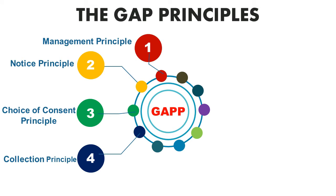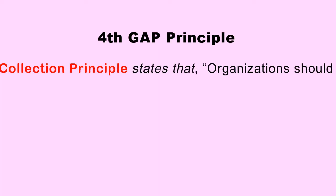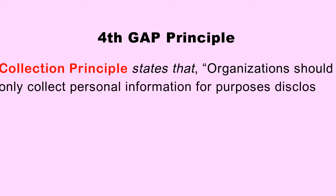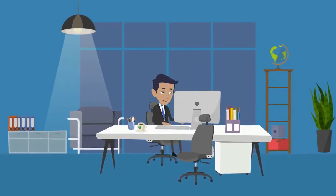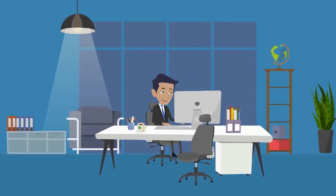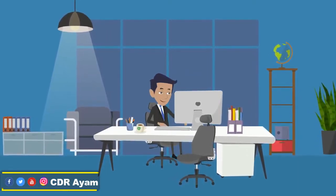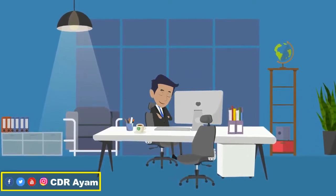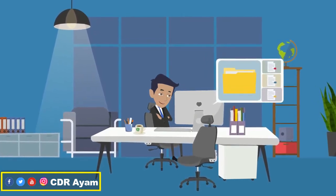The fourth GAPP principle is the Collection principle, which states that organizations should only collect personal information for the intended purposes disclosed in their privacy notice. In other words, organizations and companies ought to only gather digital information they have clearly stated in the terms and conditions notice form.